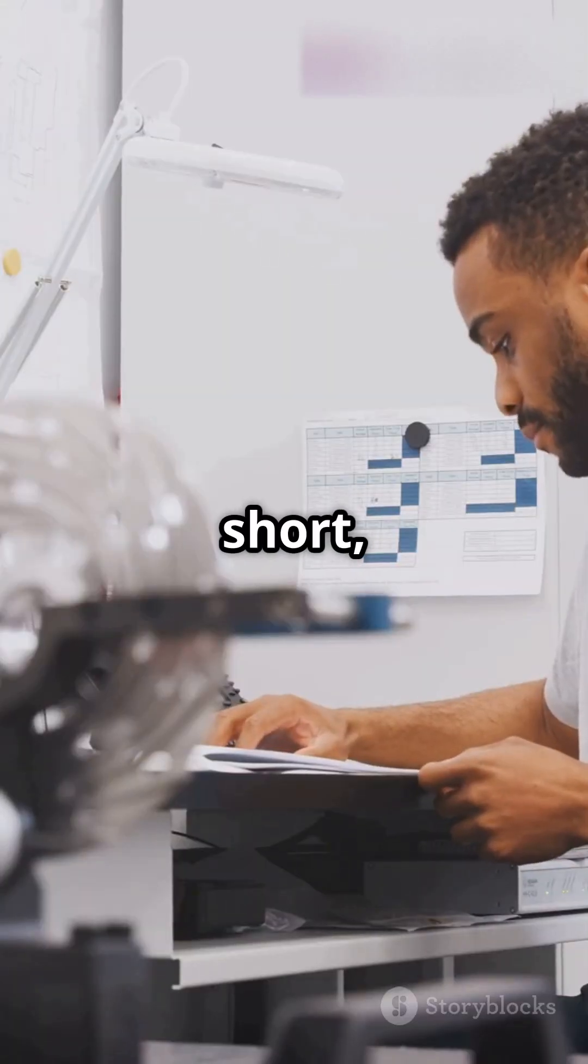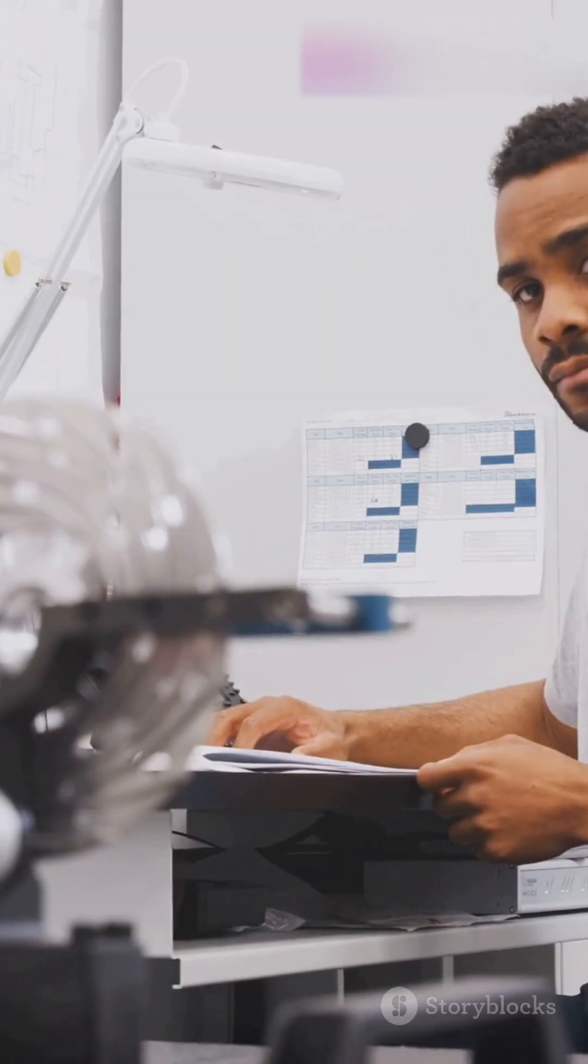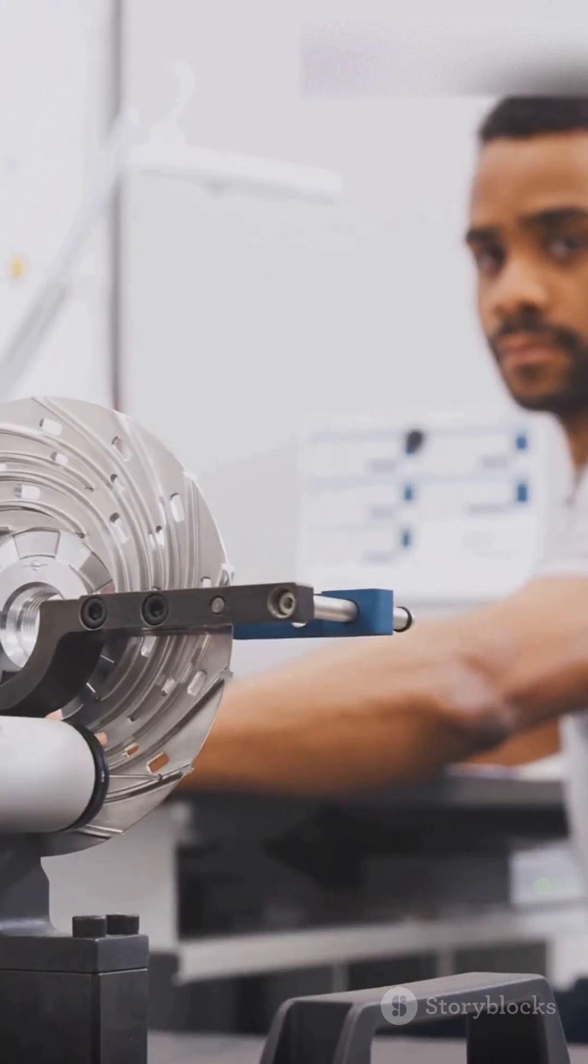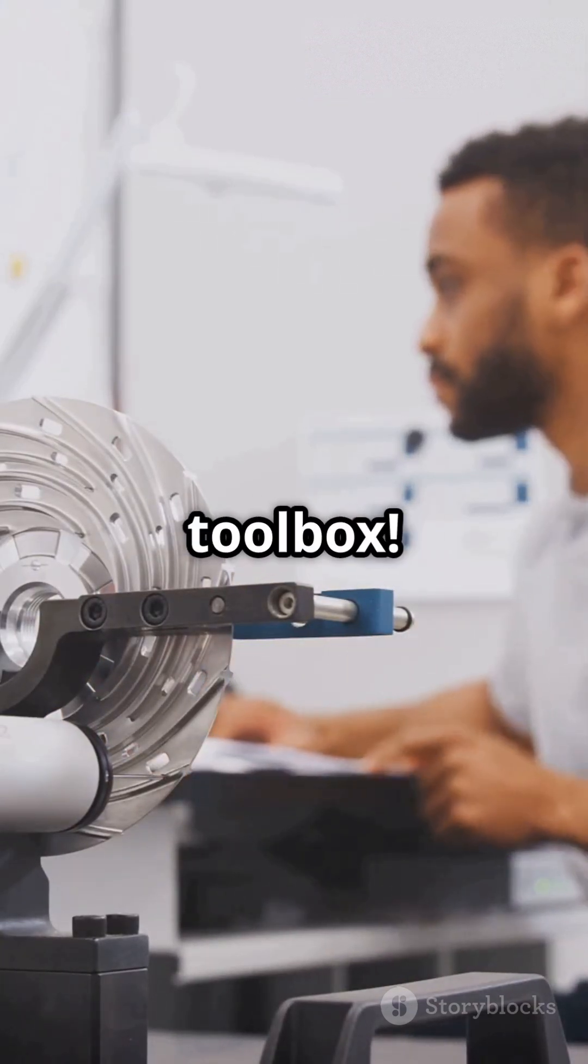In short, conventional metrology is your trusty ruler, while coordinate metrology is like having a high-tech robot assistant. Both are essential tools in an engineer's toolbox.